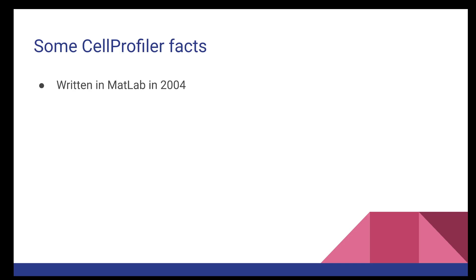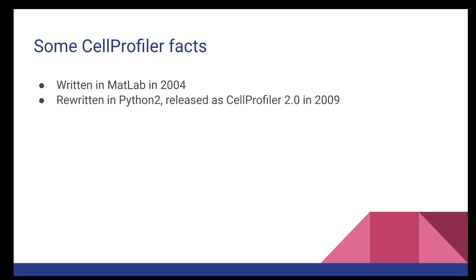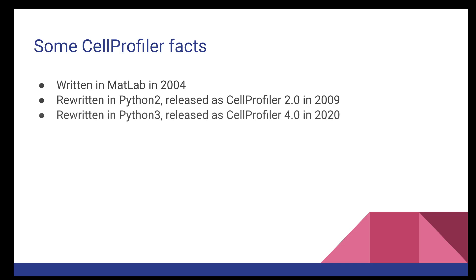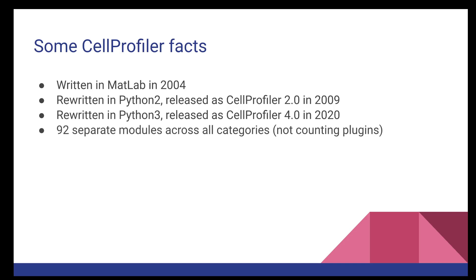To give you a little bit more of the history: CellProfiler was written in MATLAB in 2004. It was then rewritten in Python 2 and released as CellProfiler 2.0 in 2009. It was then rewritten again into Python 3 and released last year as CellProfiler 4.0. We did have a 3.0 — it had to do with adding 3D functionality. And there are 92 separate modules across all categories, not counting user-written plugins that people can bring themselves.